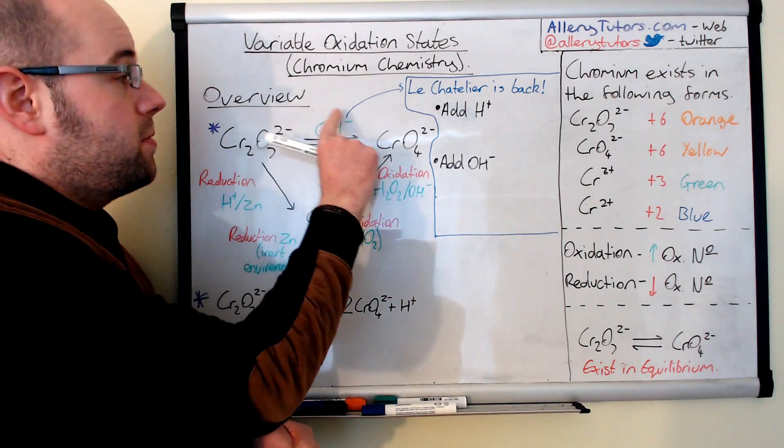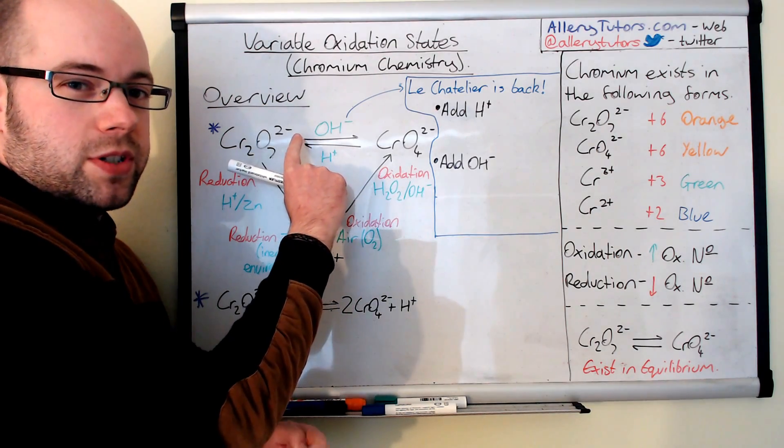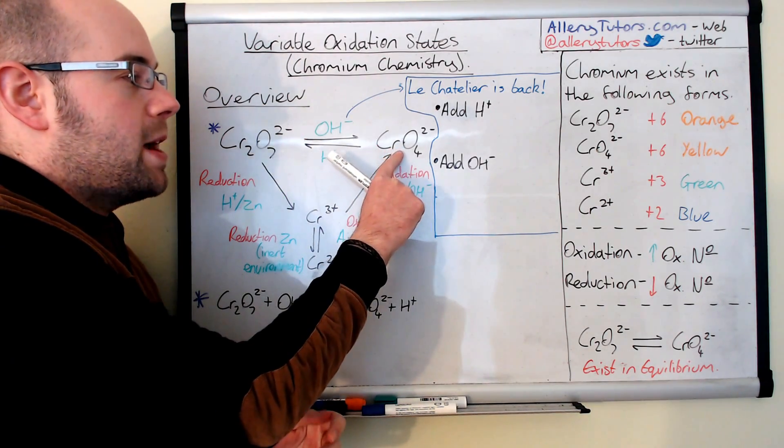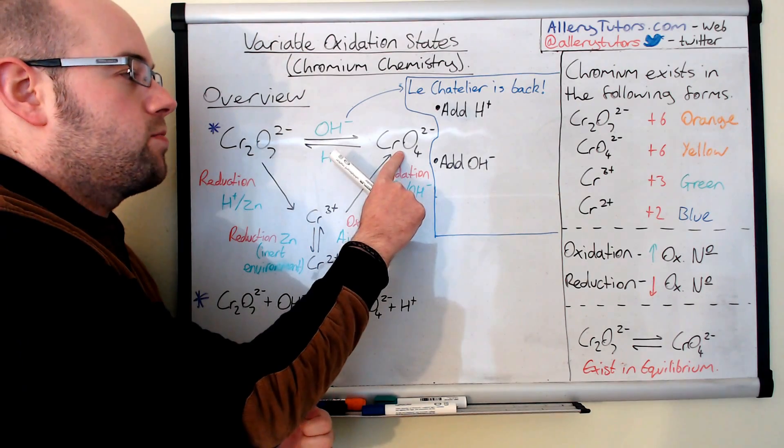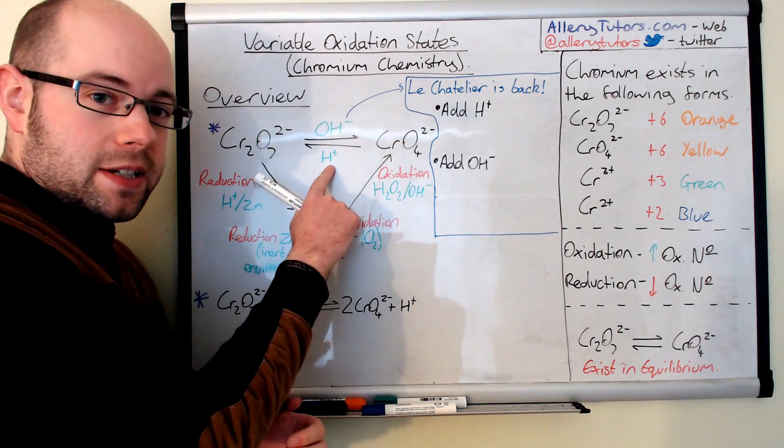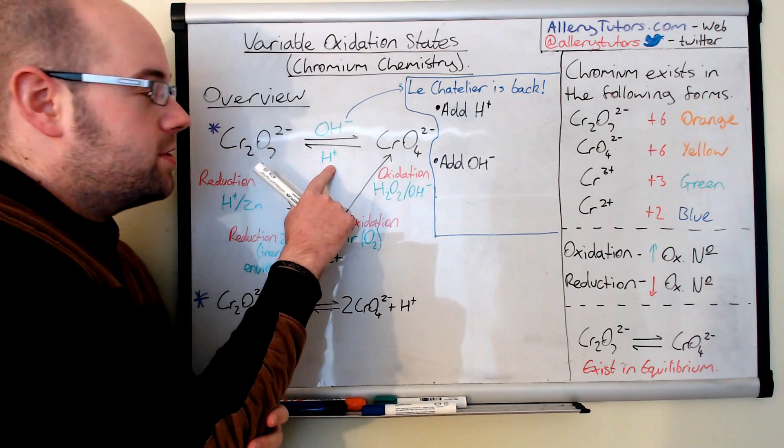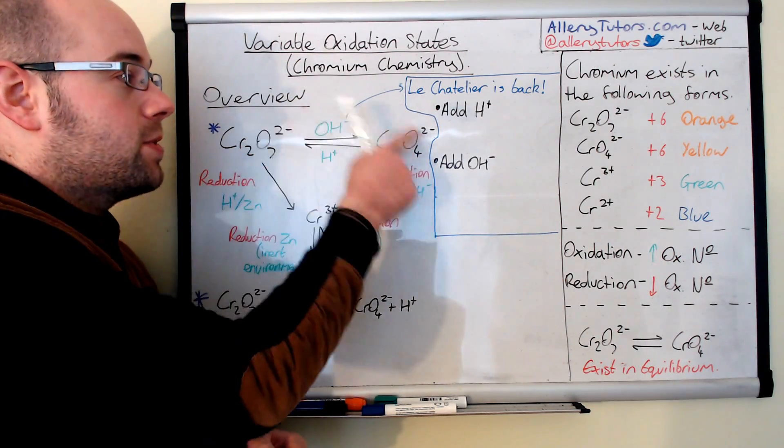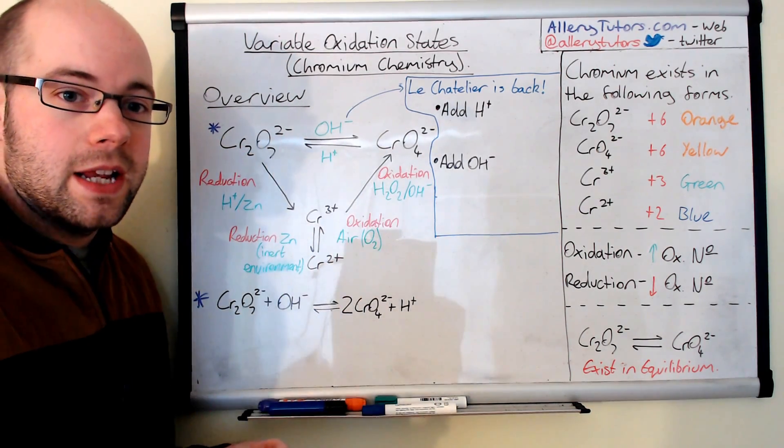And if we react it with hydroxide or we mix it with hydroxide ions, then we form chromate ions which are over here on the right. And vice versa, the chromate ions, if we react that with an acid or we put it in acidic conditions, then we form dichromate ions. So this whole lot exists in equilibrium.